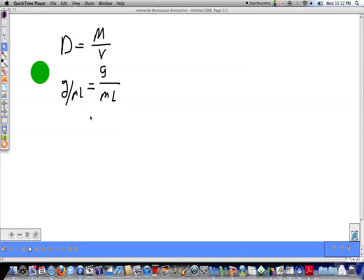Okay, this is a quick little tutorial on how to rearrange the density equation to solve for mass and volume. One way you can do it is algebraically. Another way is to use the little triangle method.